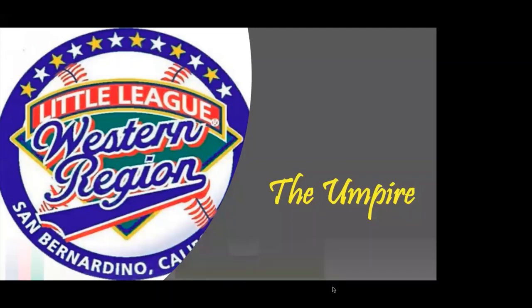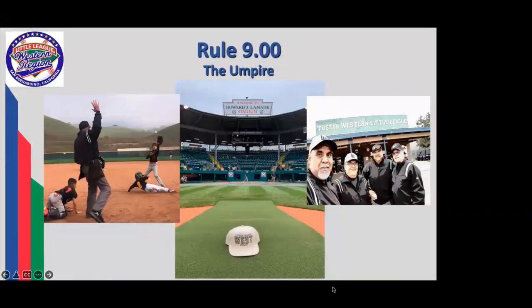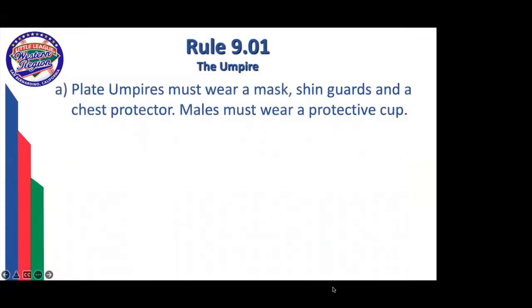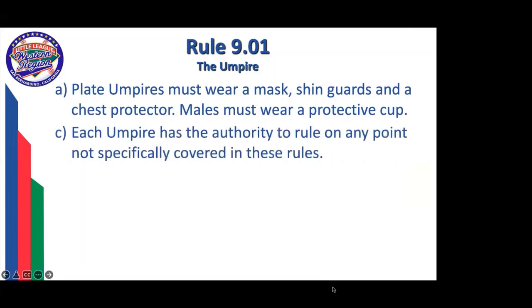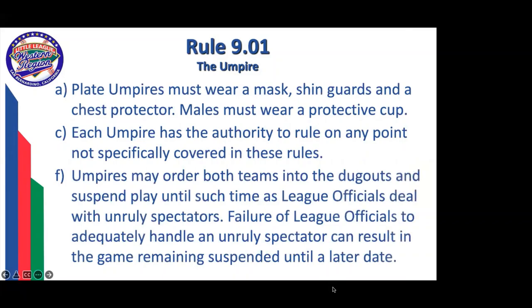Now let's move to Rule 9 — the umpire. When you are an umpire, you want to be protected and wear masks, chin guards, and chest protectors. Males must wear a protective cup. Rule 901C is important: the umpire has unlimited authority to rule on any point not covered by the rules, though most such situations involve safety. If things get out of hand, the umpire can put teams in the dugouts and suspend play until league officials deal with unruly spectators.